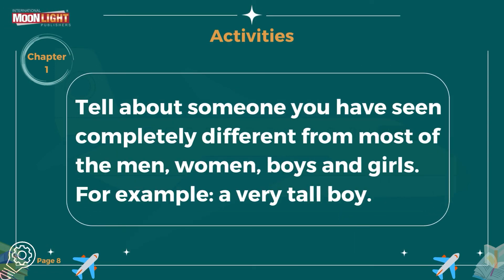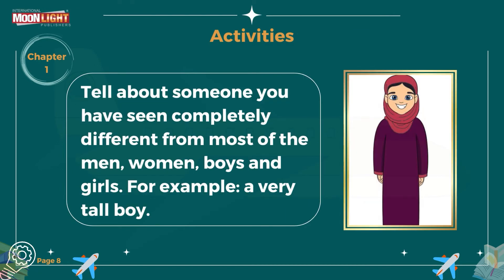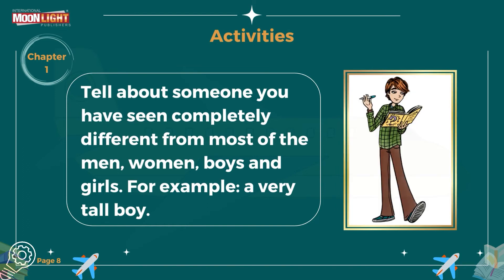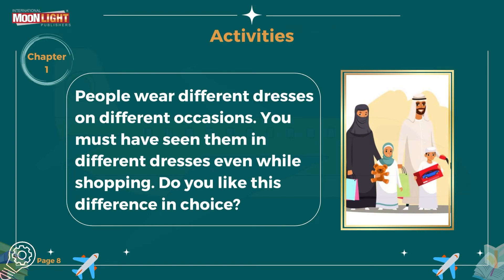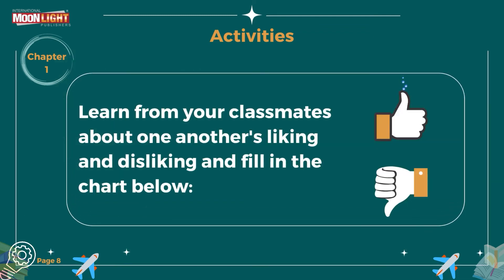There are some activities on page number eight. The first one is: tell about someone you have seen completely different from most men, women, boys, and girls — for example, a very tall boy. The second one is: people wear different dresses on different occasions; you must have seen them even while shopping — do you like these dresses and choices? The third one is: learn from your classmates about each other's likes and dislikes and fill in the chart below.